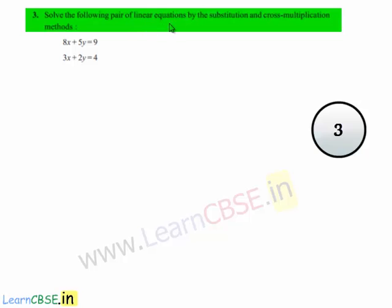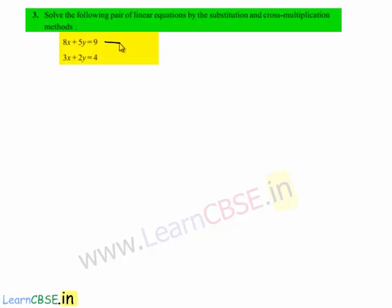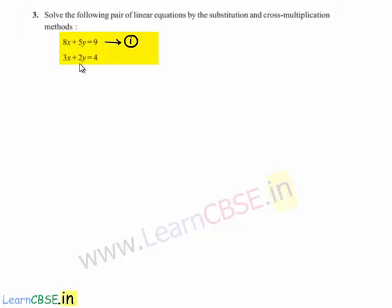Solve the following pair of linear equations by the substitution and cross multiplication methods. The first equation given is 8x plus 5y is equal to 9 — name this equation number 1. The second equation is 3x plus 2y is equal to 4 — name this equation number 2. We are asked to solve the linear equations by both methods.